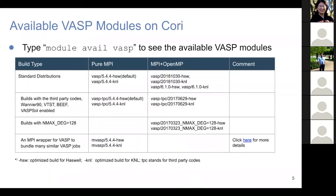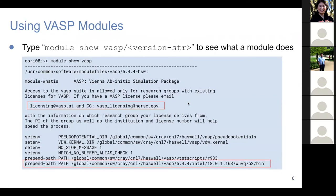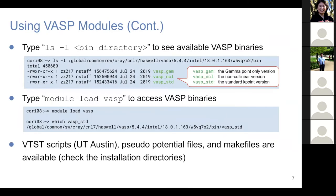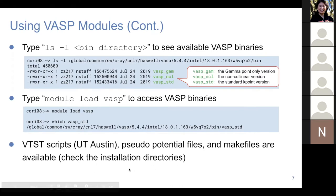We provide multiple VASP modules, both for pure MPI code and the hybrid code, and we use modules to manage those. I have shared the slides in the Google calendar invite, so you can take a look at more detailed information later. We also provide makefiles for users who want to compile VASP by themselves.